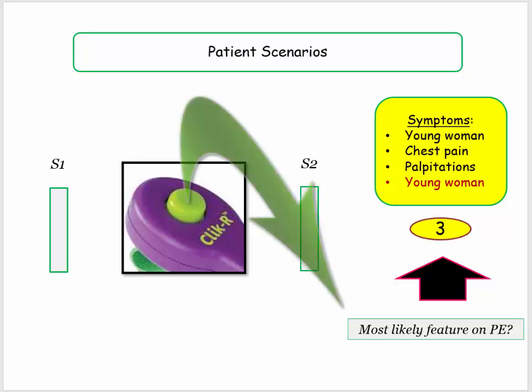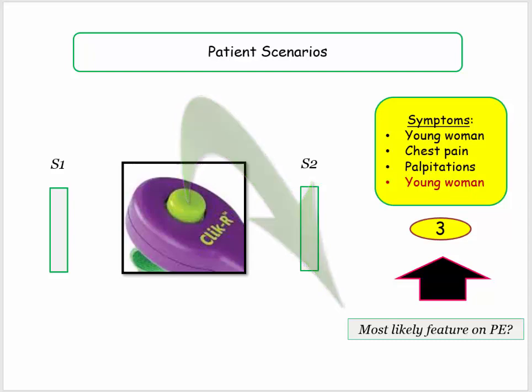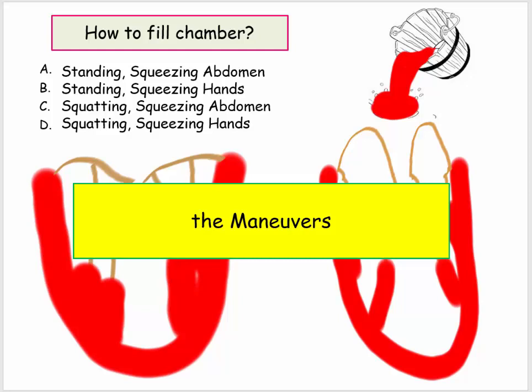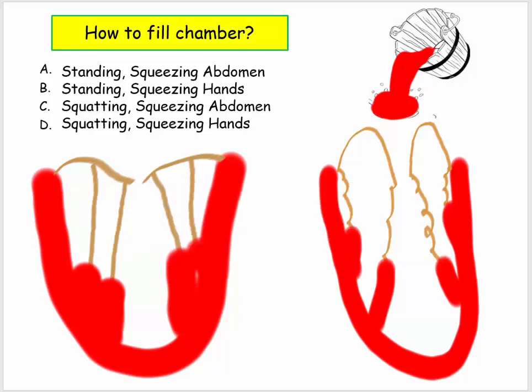So if they give you a young woman with these symptoms — probably a 35-year-old school teacher — they are setting you up for a mitral valve prolapse question, likely asking you to choose the most likely finding on physical exam: the mid-systolic click. Now, the exam maneuvers. Our goal is to maximally distend the LV chamber. Which combination of options will fill the empty chamber? The answer is D — squatting and isometric hand grip.